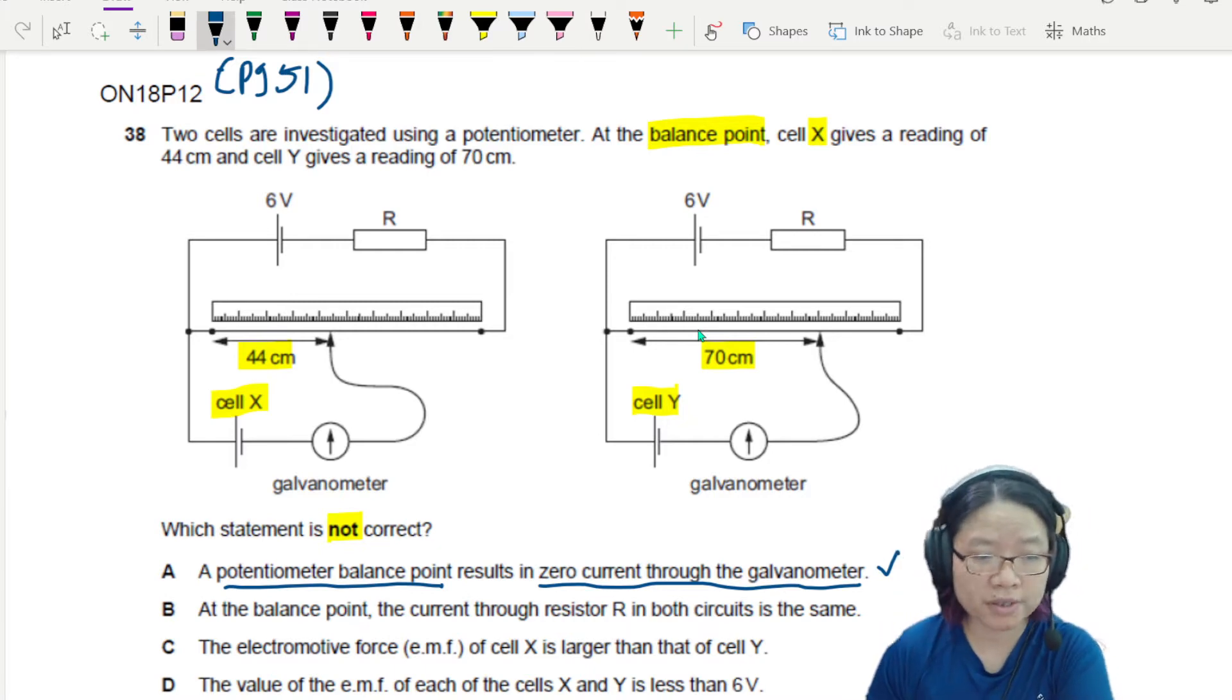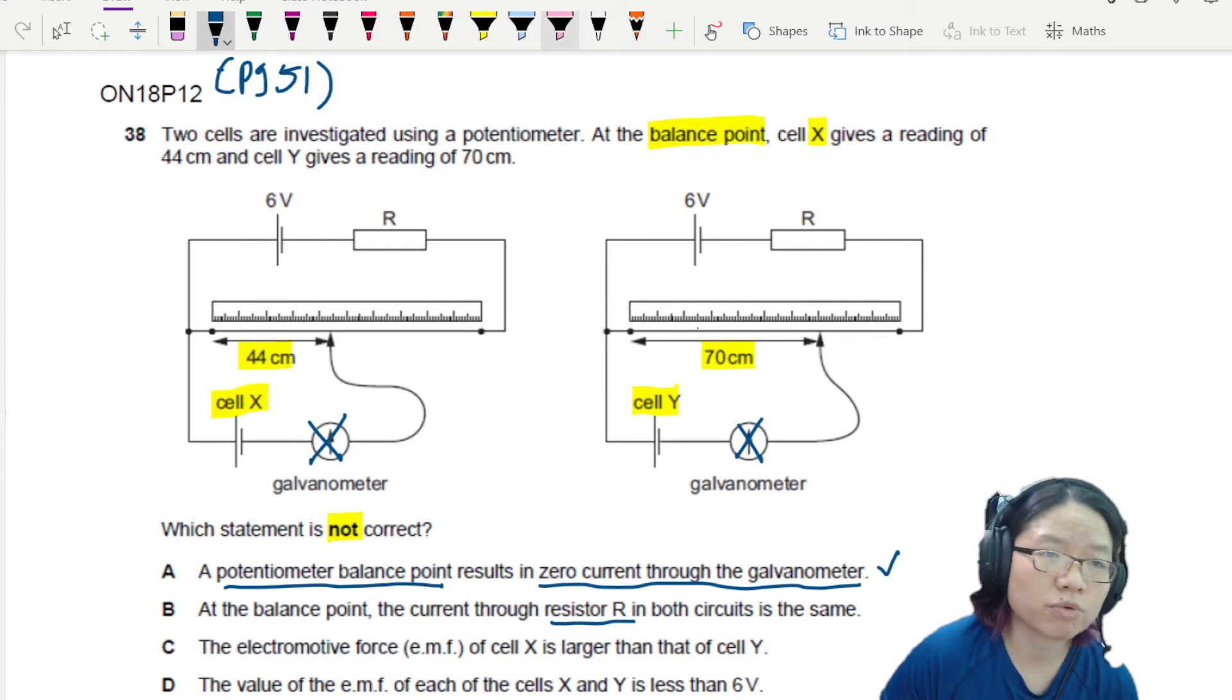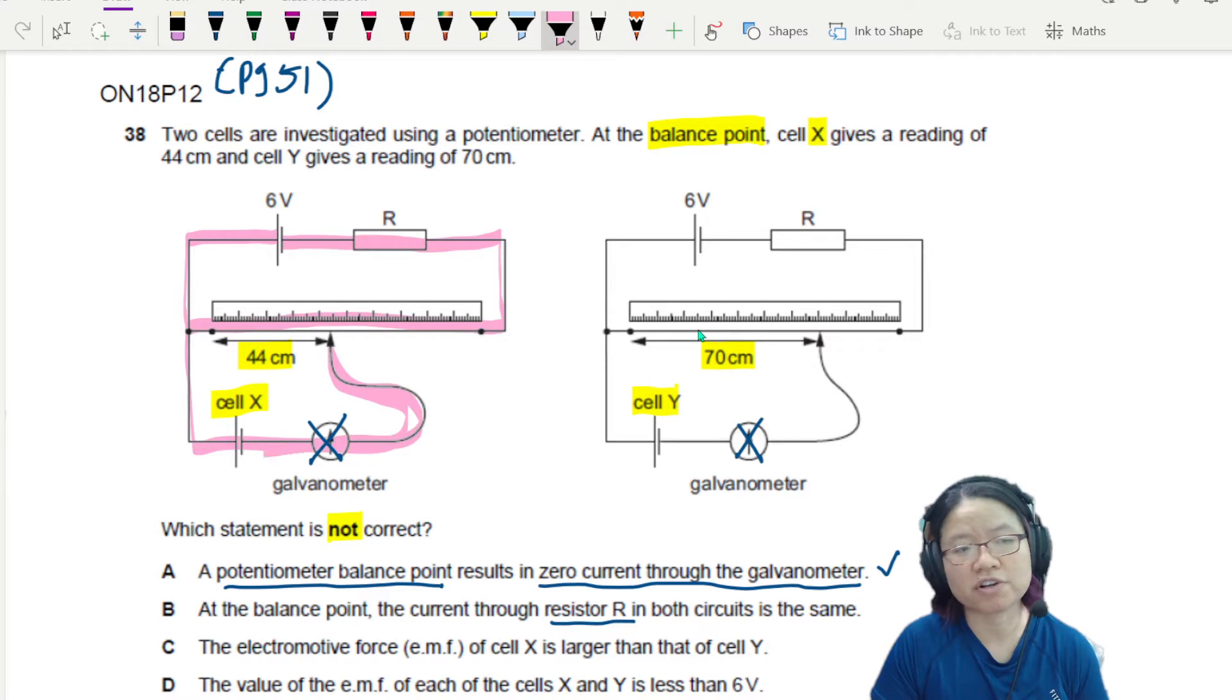B, at balance point, the current through resistor R in both circuits are the same. Let's think about it. When there is balance point, there's no current through the galvanometer for both cases. So where will the current flow? If we look at the first circuit, the current will flow through the wire and then through the resistor R. Because here cannot pass. This route is not available.